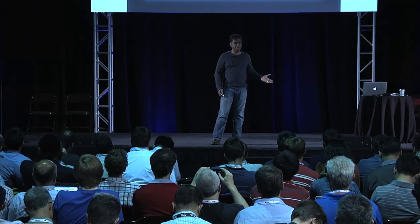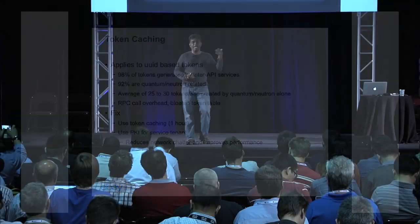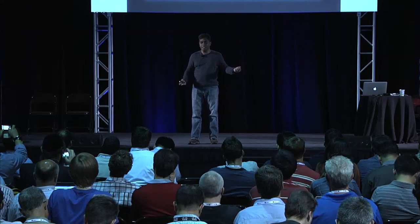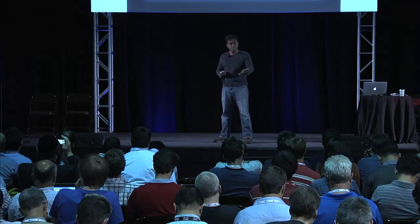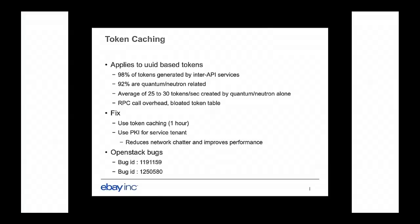We took multiple steps to address this. One was token caching — caching for about an hour so we don't have to make an API call to create a token. But you still had to make an API call to authenticate the token, addressing only half the problem. The second half is solved using PKI-based tokens — if you cache the token and use PKI, you can locally authenticate it, reducing network chatter and RPC calls. This helped us a lot. There were some OpenStack bugs on this, most recently fixed in Icehouse and ported to Havana, where token caching is now available for admin tenants.